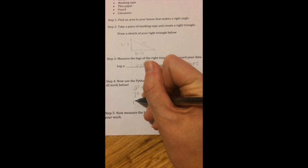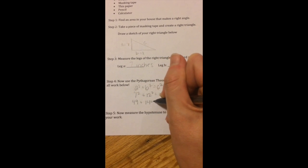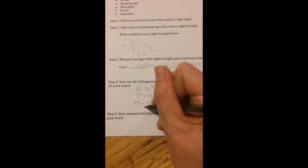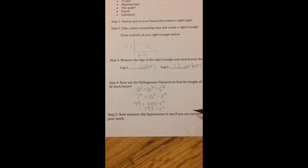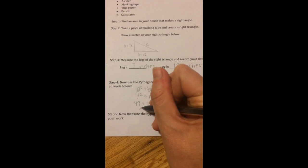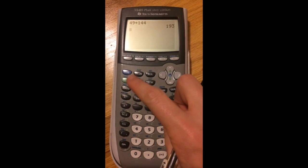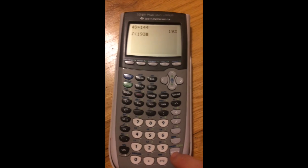7 squared is 49, plus 12 squared is 144, equals C squared. 49 plus 144 gives me 193, equals C squared. And to undo a square, you want to take the square root of both numbers. So the square root of 193 is 13.89.